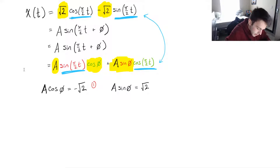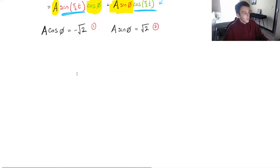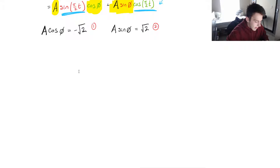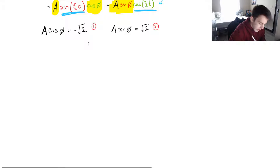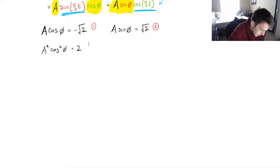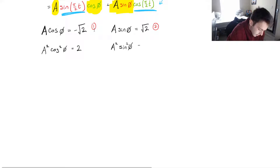Now we have two equations and two unknowns — we can solve this. We can solve it a number of ways. Let's solve for A first by squaring both equations. We can do this because as long as we do it to both sides of the equation it still holds true. The second one gives us A squared times sine squared phi equals 2.